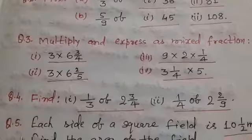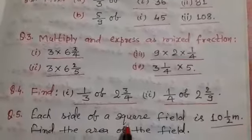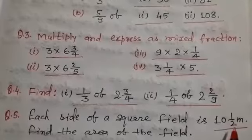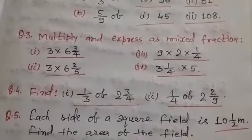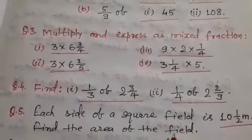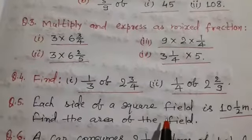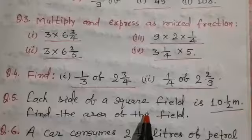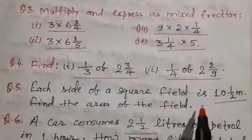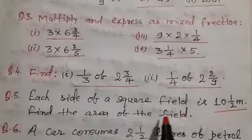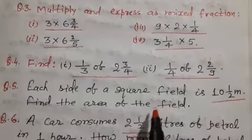Question number 5 is each side of a square field is 10 and 1 by 4, find the area of the field. As we know, area of square field is equal to side into side and side is 10 and 1 by 4, so we can easily find the answer of this question.